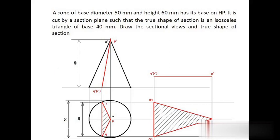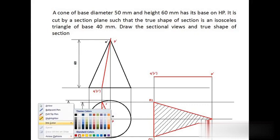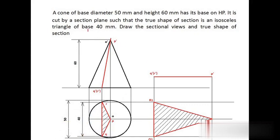The dimensions of the cone are 50 mm base diameter and 60 mm height. First, draw the cone with 50 mm base diameter and height 60 mm. To locate the position of the section plane, use the dimensions of the true shape. The true shape is an isosceles triangle of base 40 mm. To get an isosceles triangle from a cone, the section plane should pass through the apex. You can see the red line indicating the position of the section plane passing through the apex.